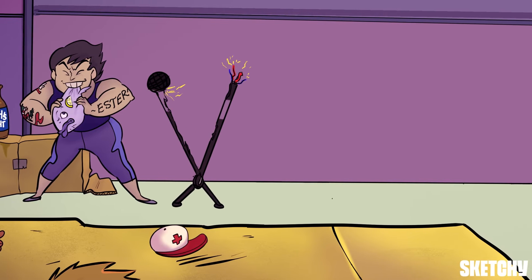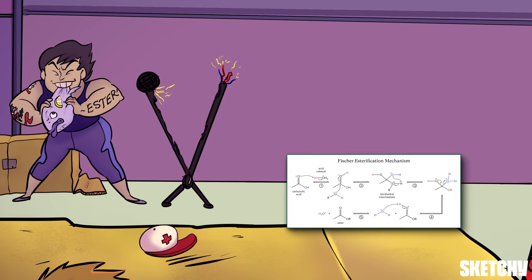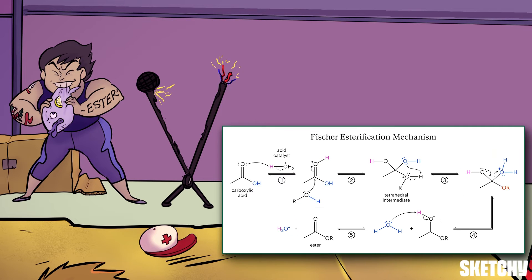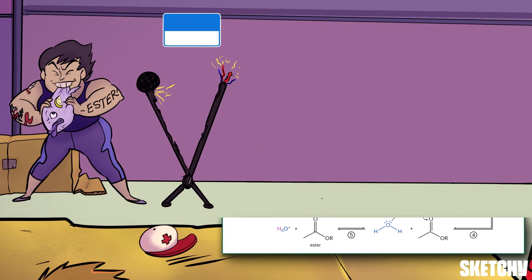Now let's take a look at exactly how a Fischer Esterification reaction happens. First, the acid protonates the carbonyl oxygen in the carboxylic acid. Then, the carbonyl's double bond breaks and a tetrahedral intermediate forms, which is similar in shape to a microphone on a broken stand. Perhaps self-promoting Ester is going to use this mic to sing her own praises. How esterific.